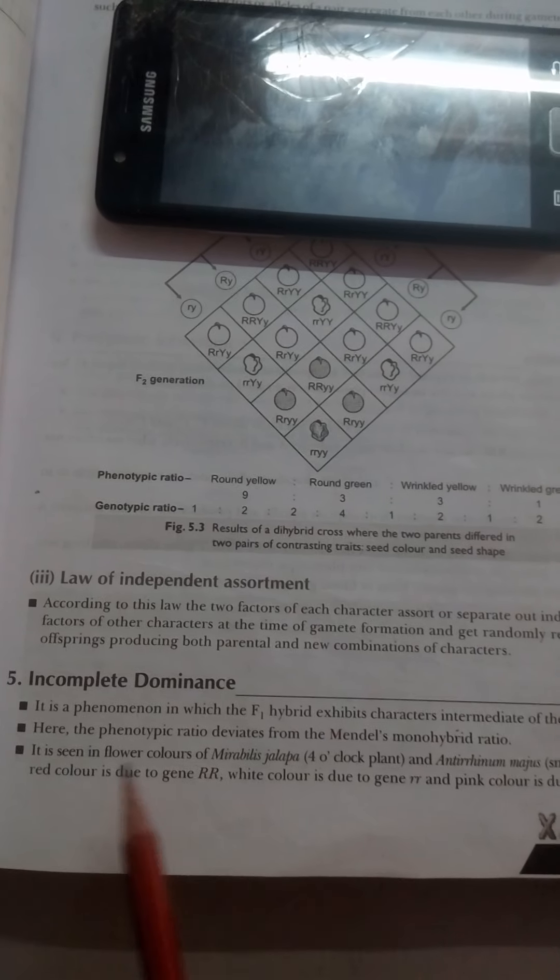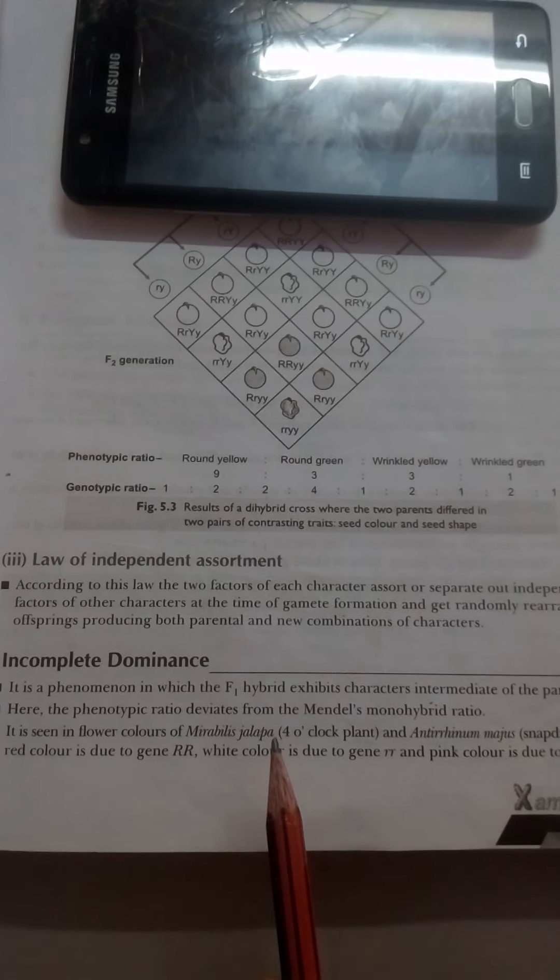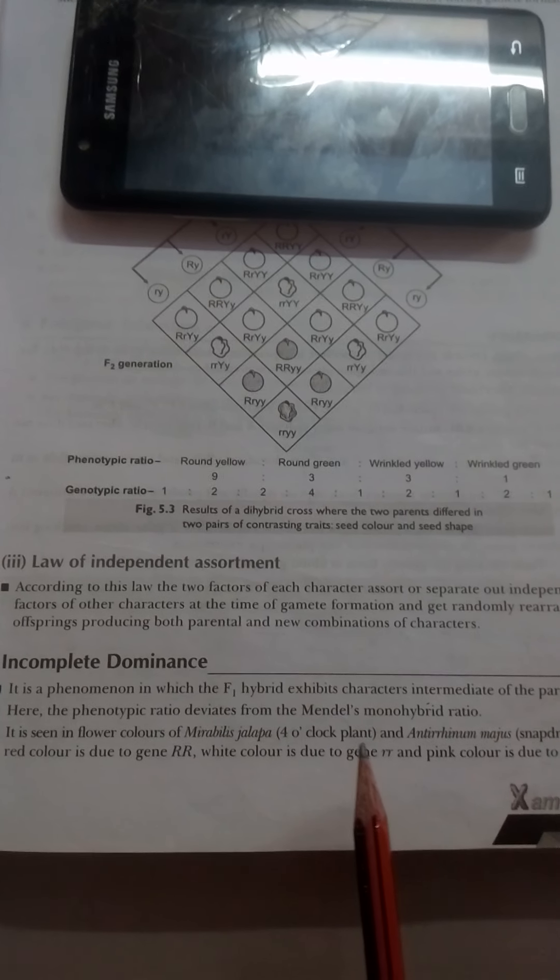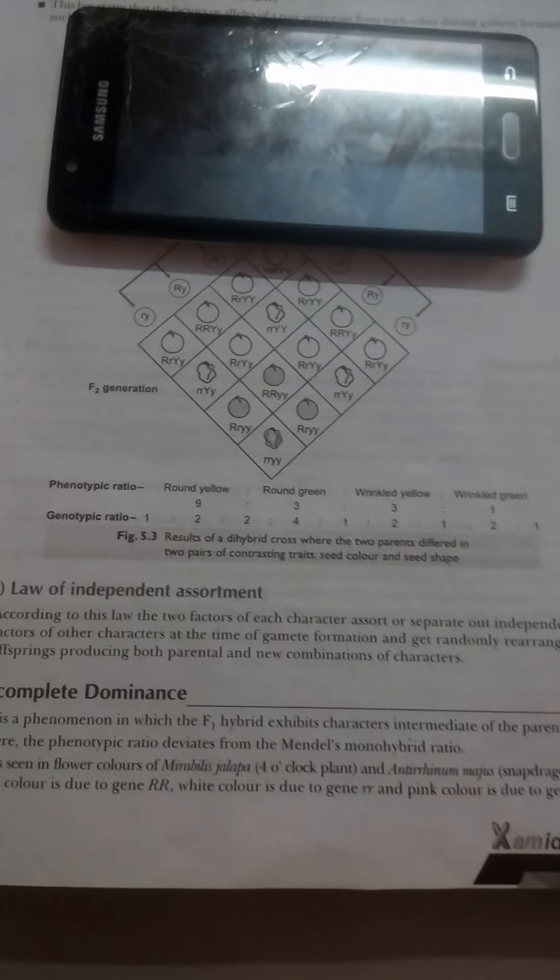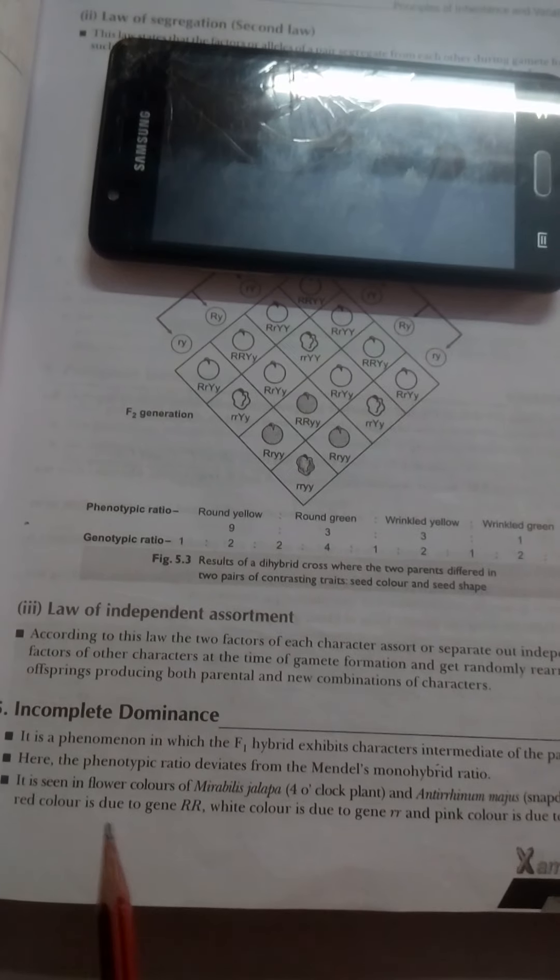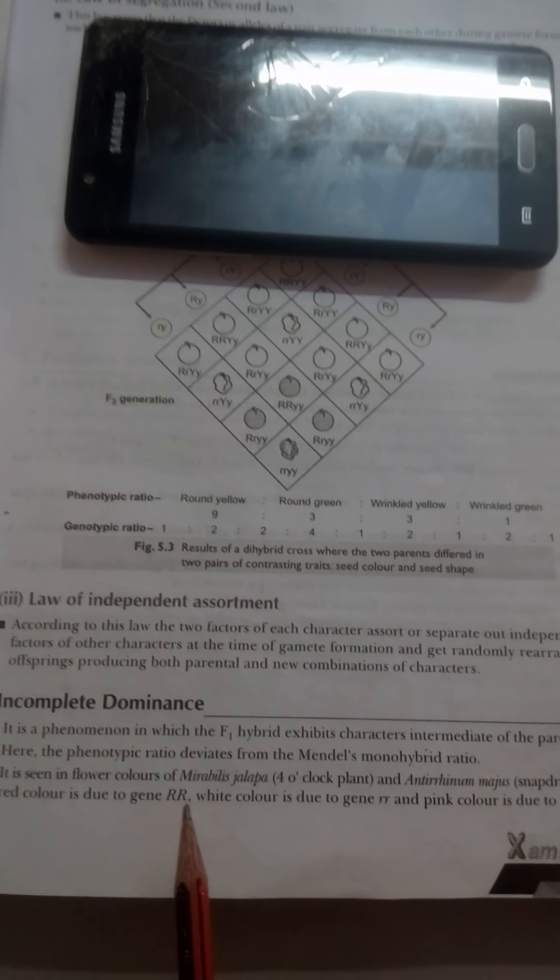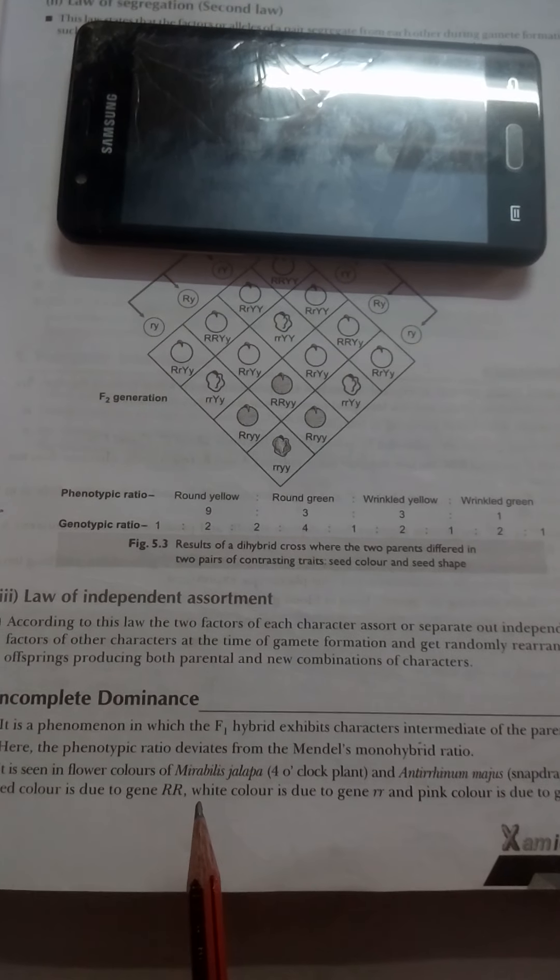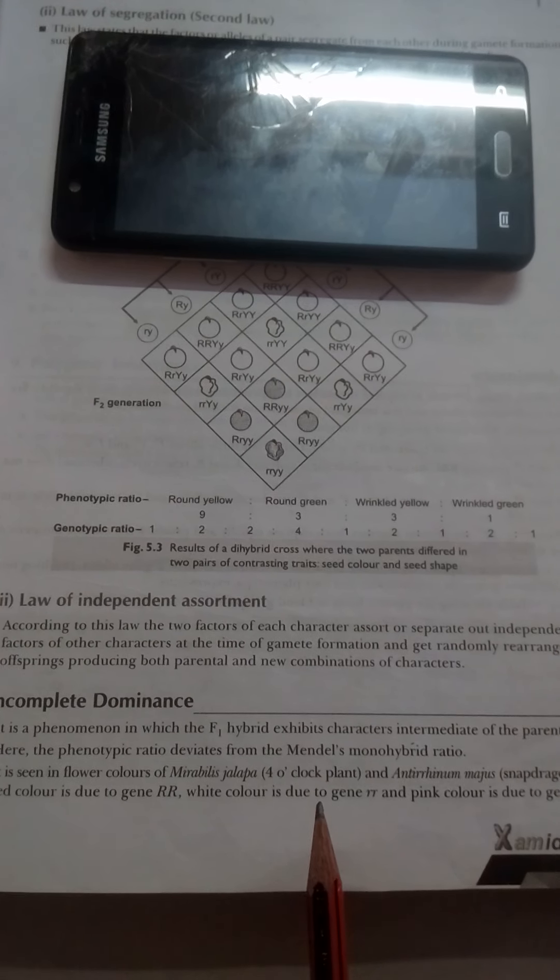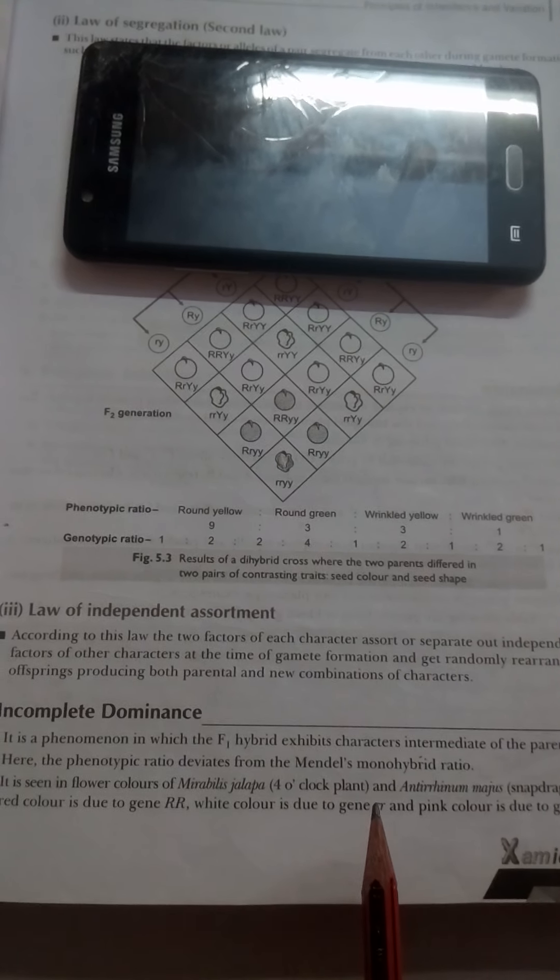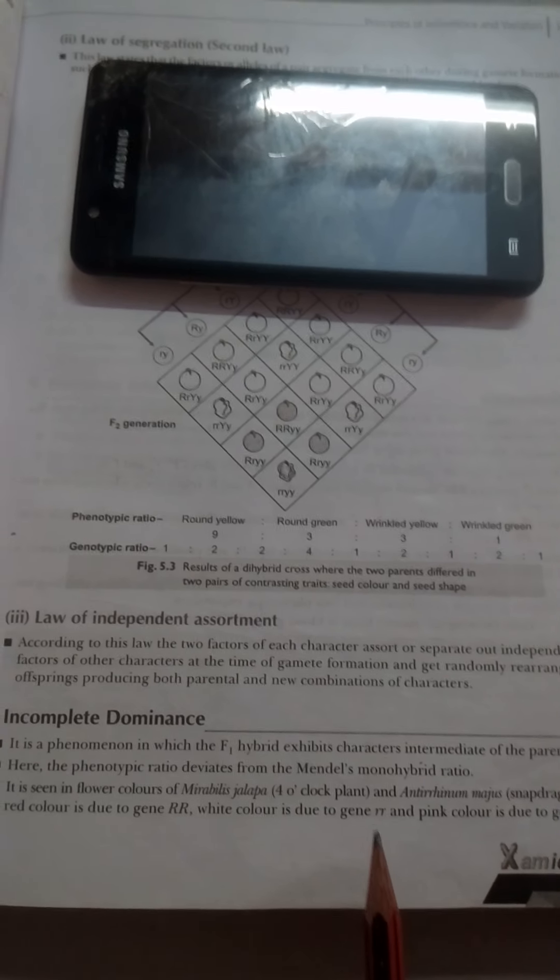It is seen in flower colors of Mirabilis jalapa, which is commonly called four o'clock plant, and Antirrhinum majus, commonly called snapdragon, where red color is due to gene capital R capital R. This means red color is dominant. White color is due to the gene small r small r. White color is recessive.